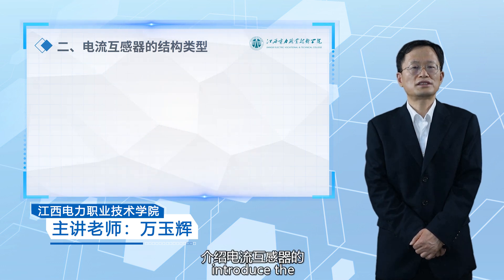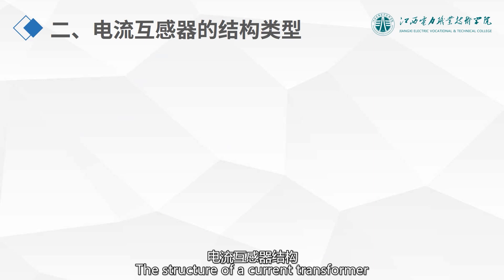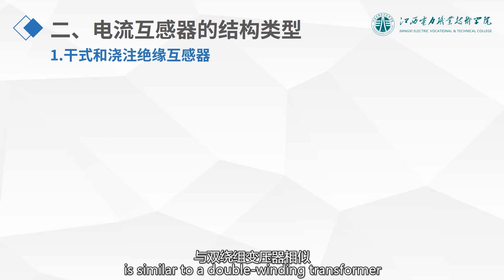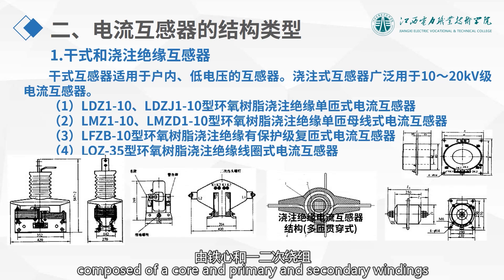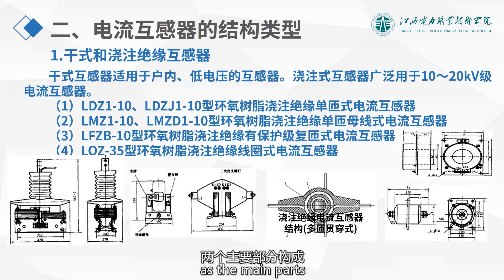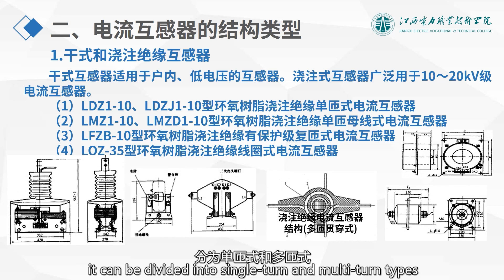Next, we will introduce the structure types of current transformers. The structure of a current transformer is similar to a double-winding transformer, composed of a core and primary and secondary windings as the main parts. According to the number of primary winding turns, it can be divided into single-turn and multi-turn types.